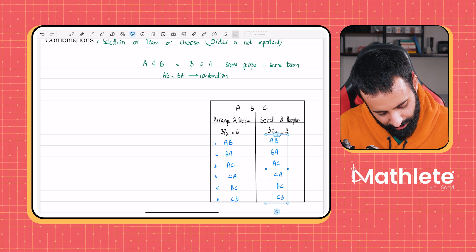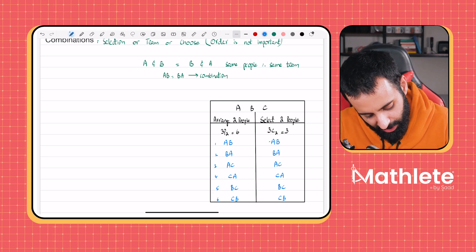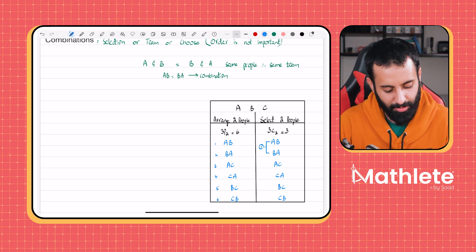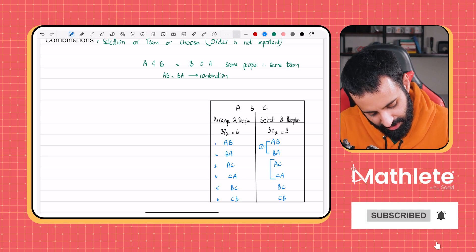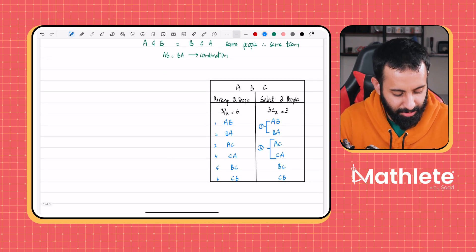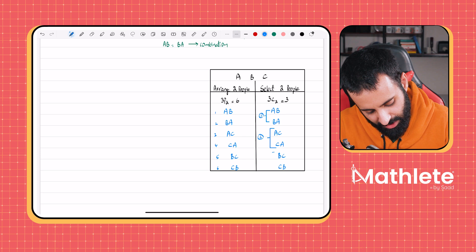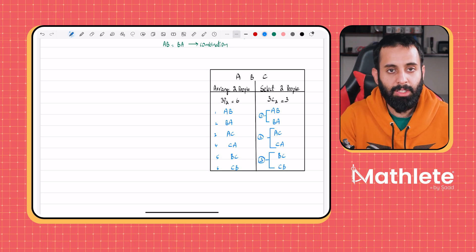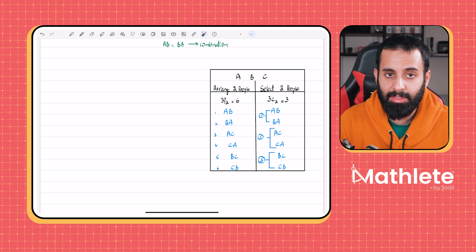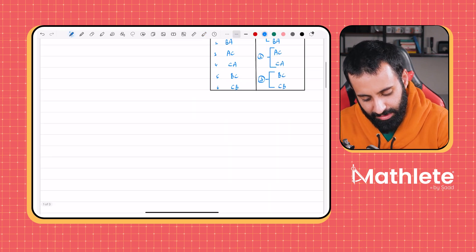If we think about it: we're making a team, so AB and BA is considered one team because it's the same two people. Similarly, AC and CA are the same two people — in permutation order matters, but in combination order is irrelevant. Likewise, BC and CB are the same two people. That's why when selecting two people from three, we have only three options. This is the key difference between permutation and combination.